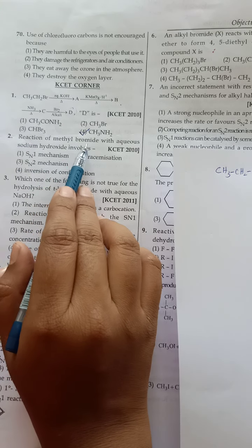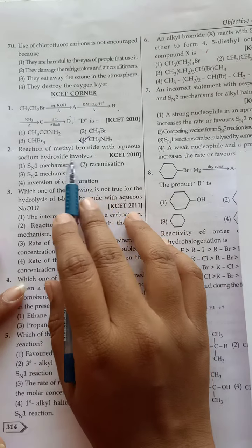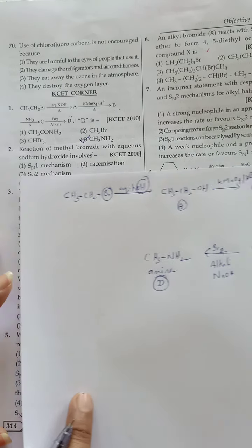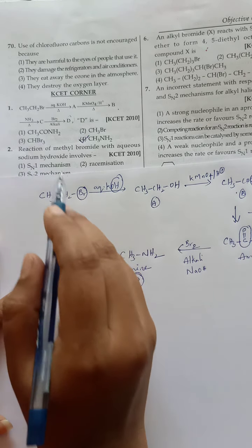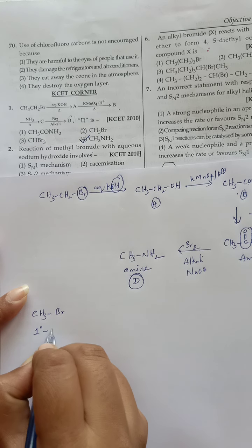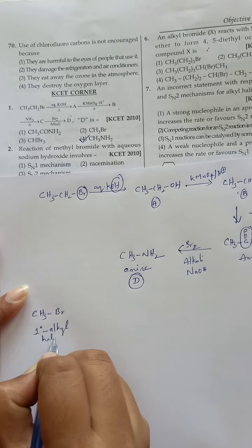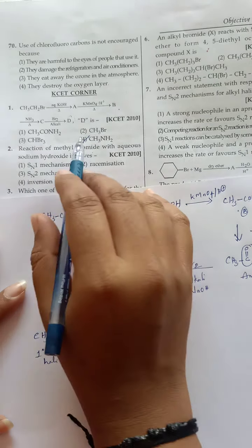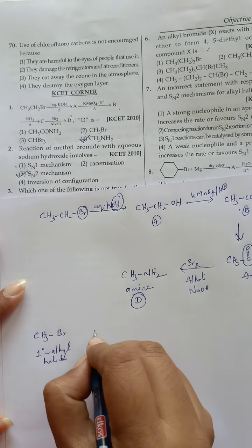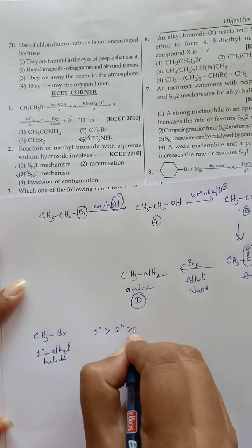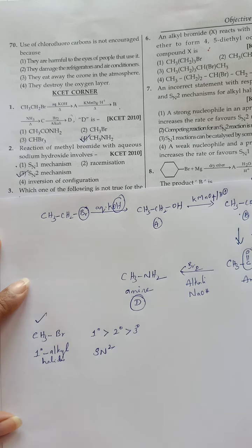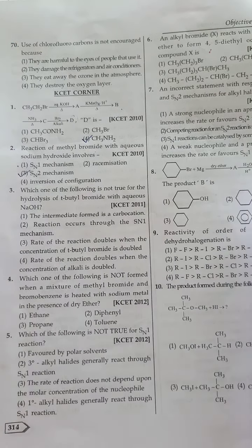Now see the next question. Reaction of methyl bromide with aqueous sodium hydroxide involves... Methyl bromide is CH3Br. Is this a primary alkyl halide? Yes. So this primary alkyl halide favours SN2 reaction because primary alkyl halides are more reactive than secondary, then tertiary, towards SN2 mechanism. So the answer is SN2.